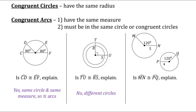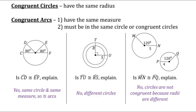And then last, we have arcs MN and PQ. First, do they have the same measure? Yes, both have a central angle of 120 degrees. Second, are they part of the same circle or congruent circles? This circle has a radius of 5 and the other has a radius of 4, so those two circles are not congruent. Therefore, these two arcs are not congruent.